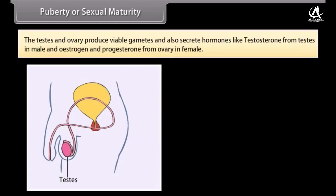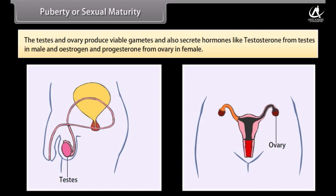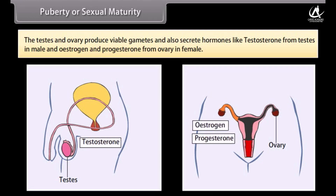The testes and ovaries produce viable gametes and also secrete hormones — testosterone from testes in males, and estrogen and progesterone from ovaries in females.